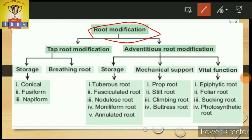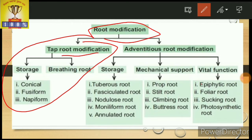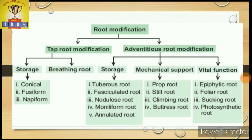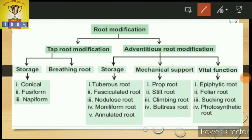Now we focus on the modification of tap root. Some plants have their tap roots modified for storage and also for breathing roots. Breathing roots are also called pneumatophores — roots useful for breathing, that is, the exchange of gases. Normally, plants breathe with the help of stomata present in leaves, but in these modified roots, breathing also takes place.